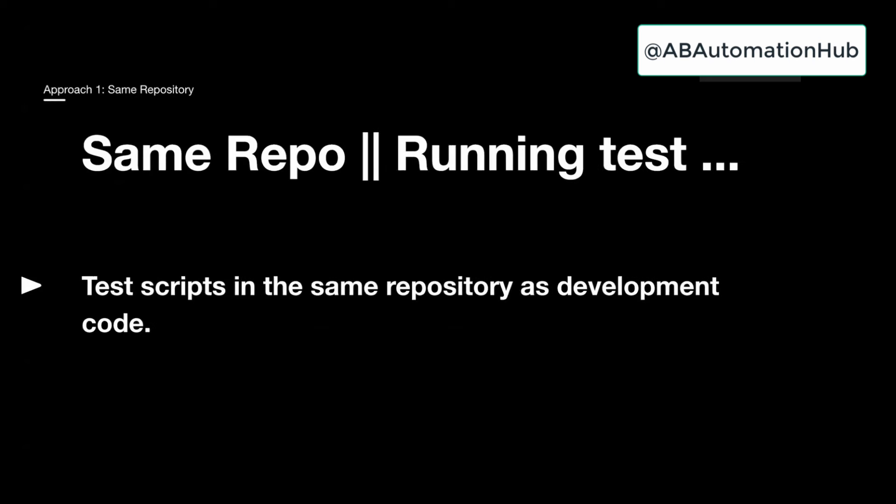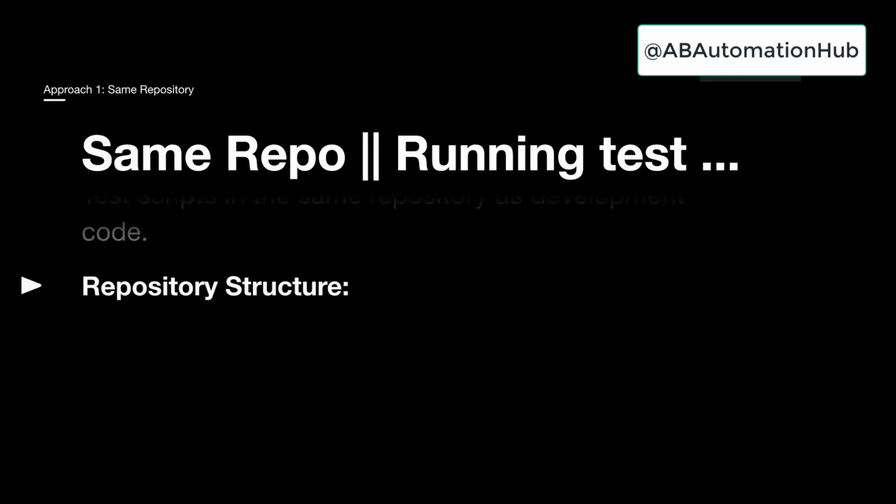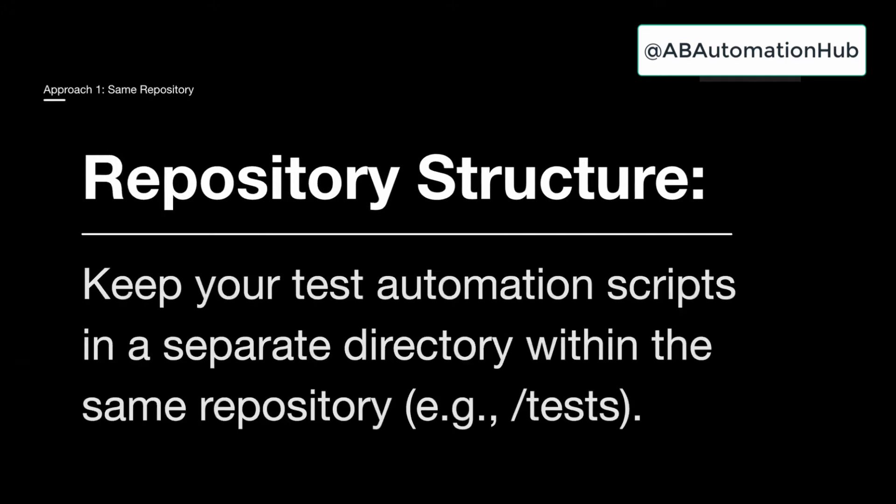Let's deep dive into this approach. In this approach, your test scripts will be in the same repository as the dev repository code. The repository structure would be in such a way that you keep your test automation scripts in a directory within the same repository — for example, all your code in 'src' and all your test automation scripts in a 'test' directory.